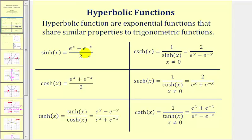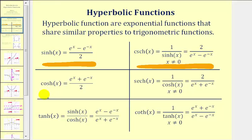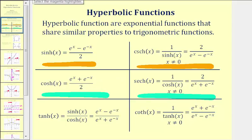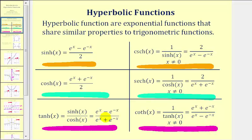Notice how if we compare the hyperbolic sine function and the hyperbolic cosecant function, the functions are reciprocals of one another, just like the sine and cosecant trig functions. Similarly, the hyperbolic cosine function and the hyperbolic secant function are also reciprocals of one another, just like cosine and secant. And finally, the hyperbolic tangent function and the hyperbolic cotangent function are also reciprocals of one another.